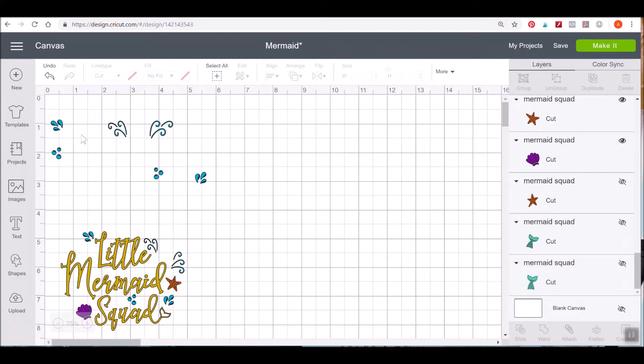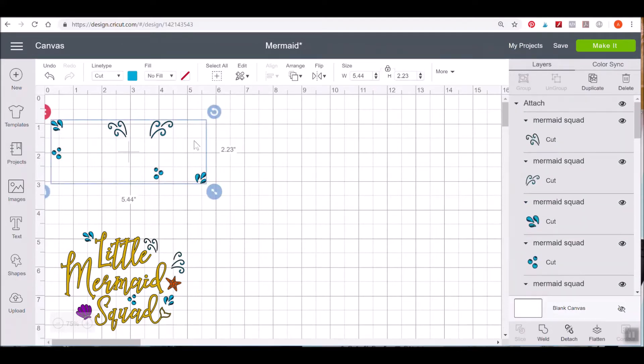If these pieces were all detached, that would be how I would get them like that to attach them. And then I could bring the other layers back and attach them as needed.